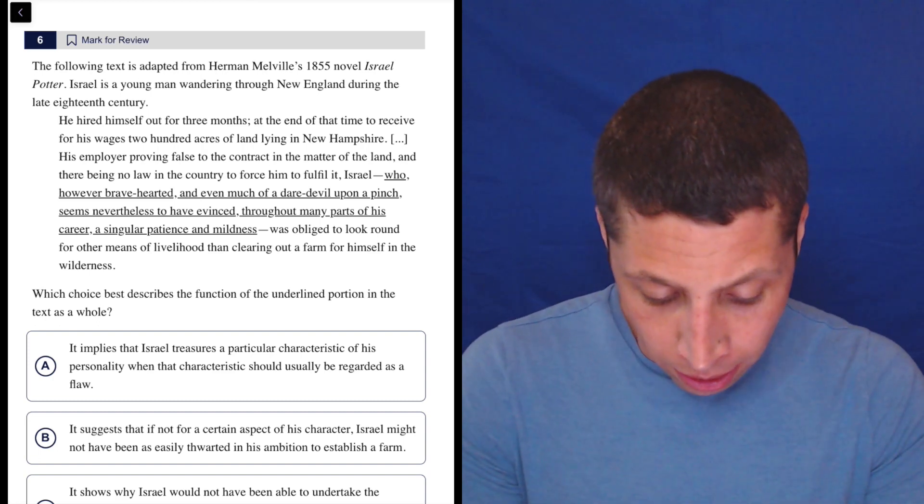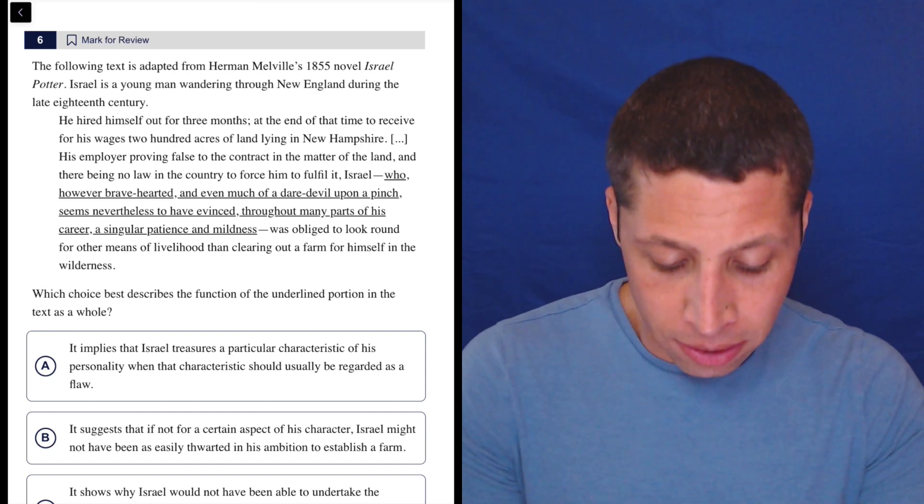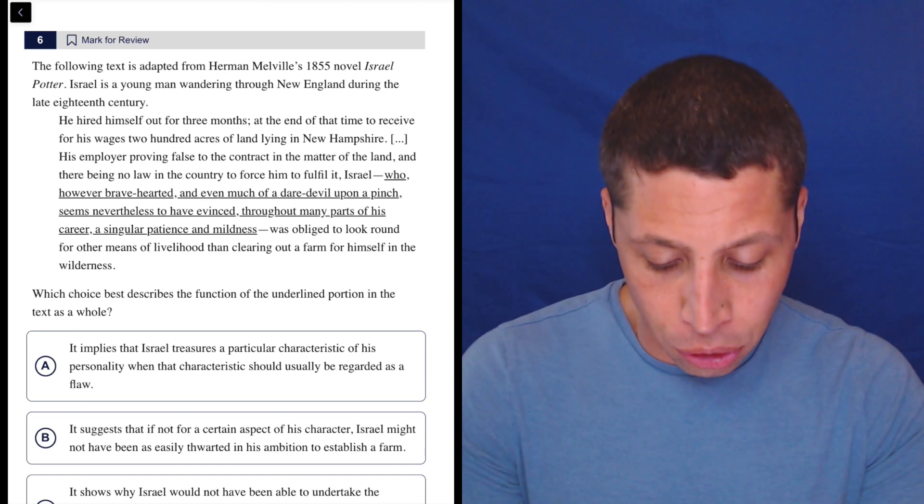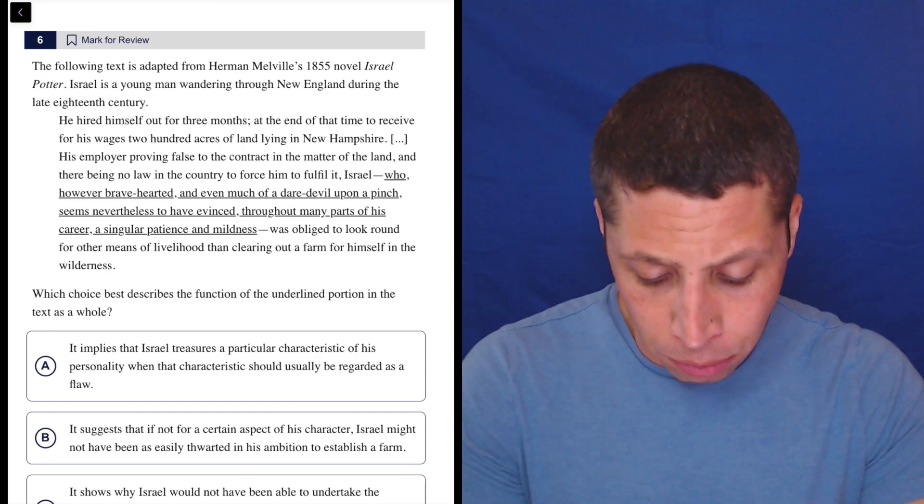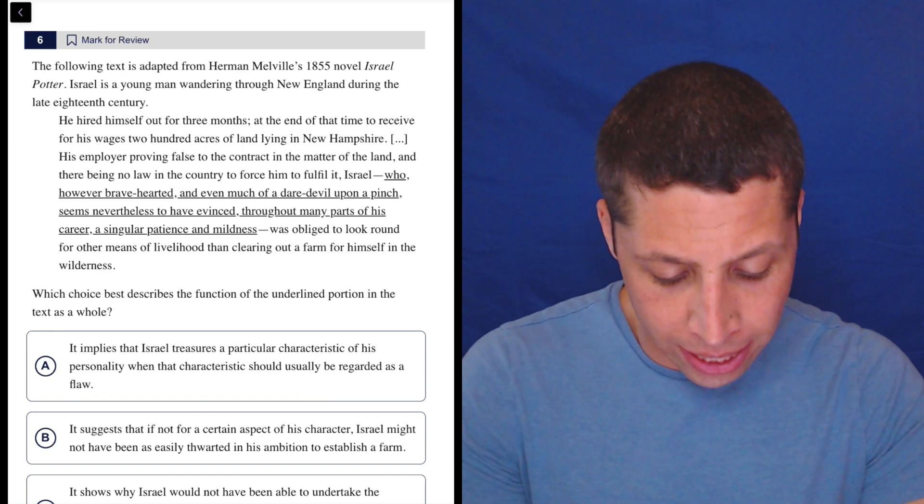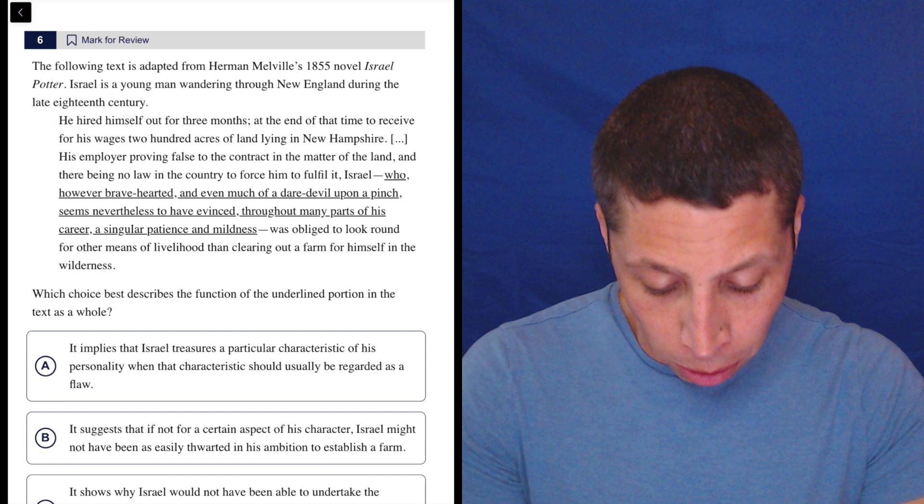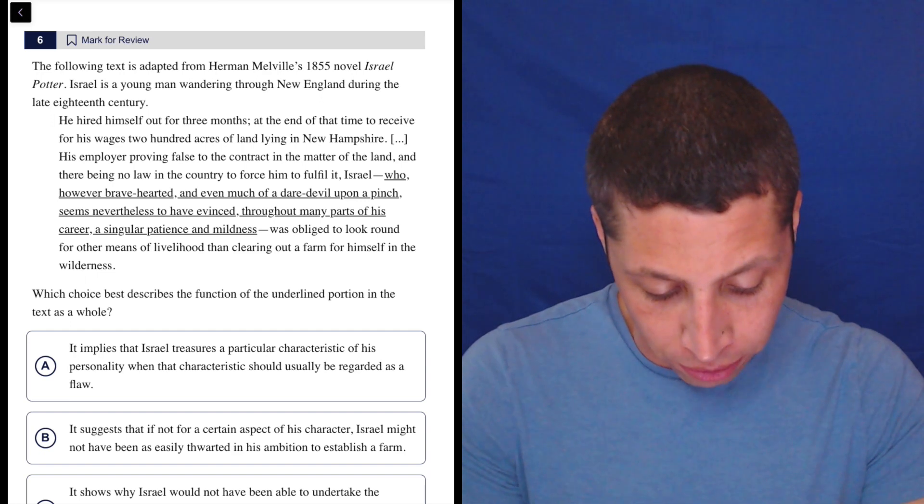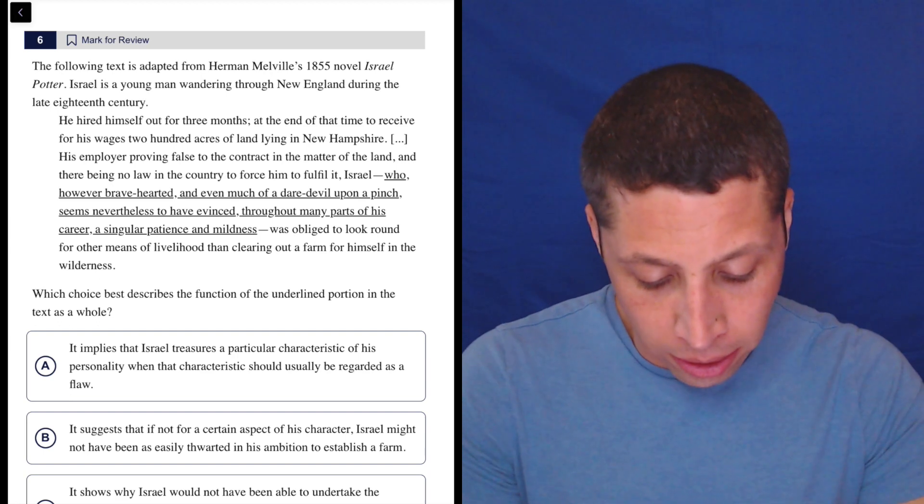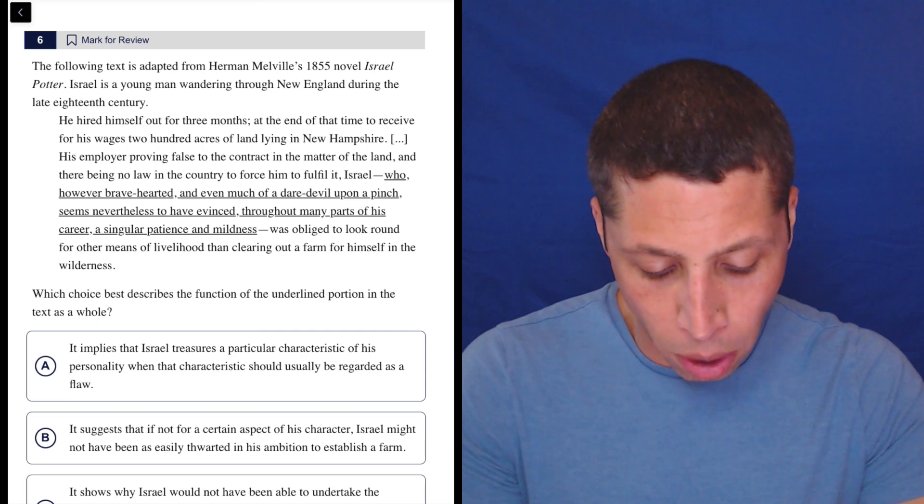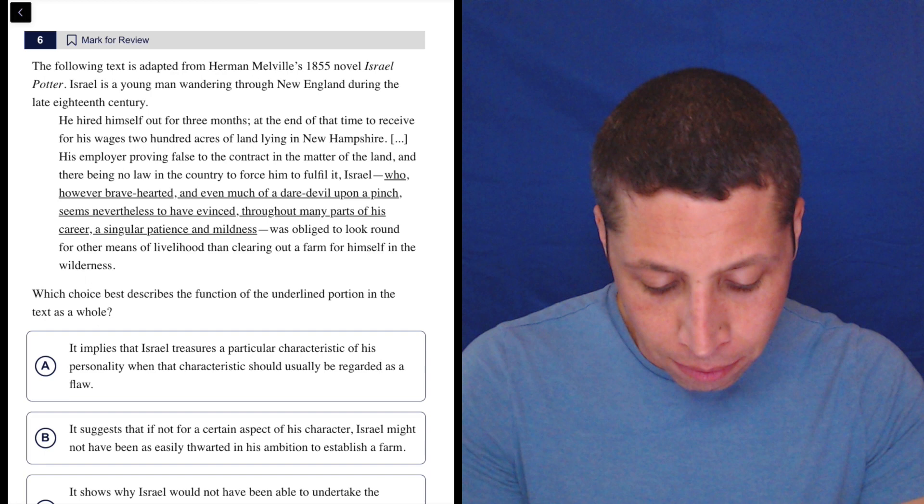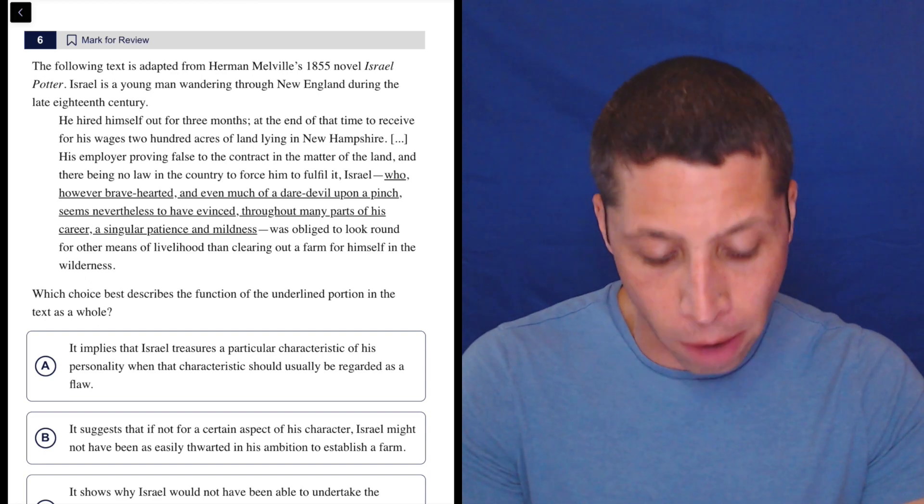So let's see what it's all about. This is adapted from this novel, Israel as a young man wandering through New England during the late 18th century. He hired himself out for three months. At the end of that time, to receive for his wages 200 acres of land lying in New Hampshire. His employer proving false to the contract in the matter of the land, and there being no law in the country to force him to fulfill it, Israel, who however bravehearted and even much of a daredevil upon a pinch, seems nevertheless to have evinced throughout many parts of his career a singular patience and mildness, was obliged to look around for other means of livelihood than clearing out a farm for himself in the wilderness.